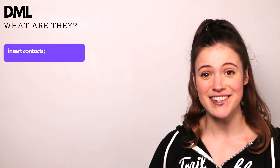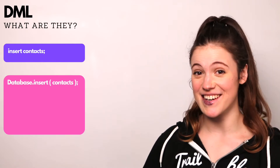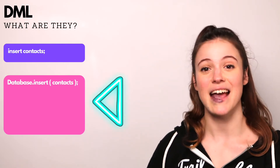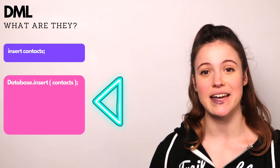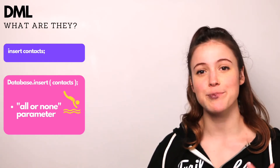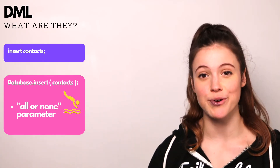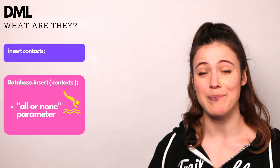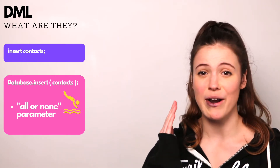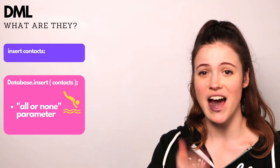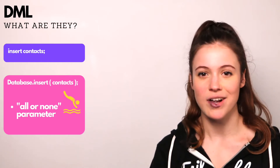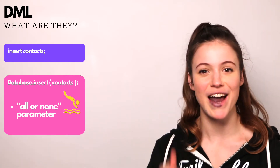You might see them written like this or like this. The advantage of writing them like this is that it can also take in what we call the all-or-none parameter. This parameter is a boolean value, and if it's true, we're basically saying we are going all in, all of us, right now, right here, or none of us are going in at all. It's all or nothing.